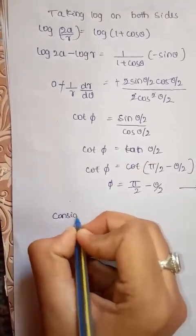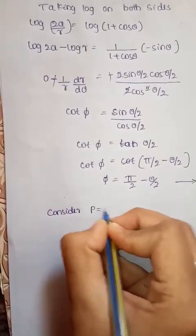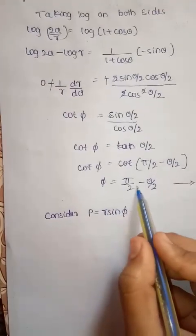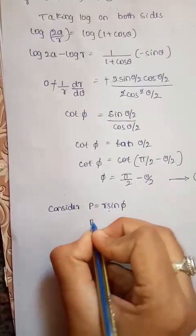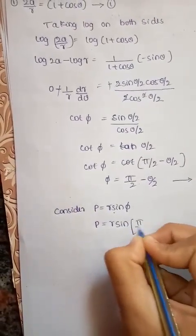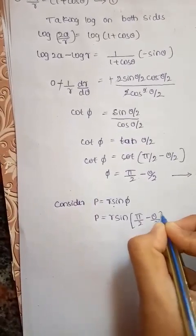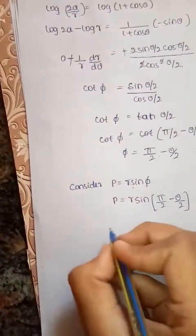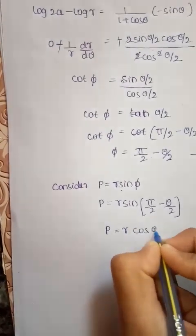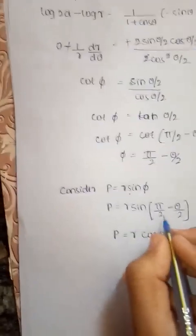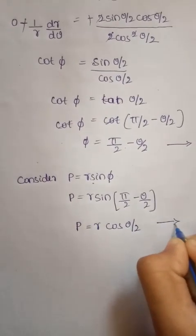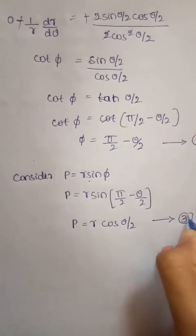Consider P equals R sin phi. Substitute the phi value in this equation: P equals R sin(pi/2 minus theta/2). Then P equals R cos(theta/2). Sin(pi/2 minus theta) can be written as cos(theta/2). We will take this as equation 3.